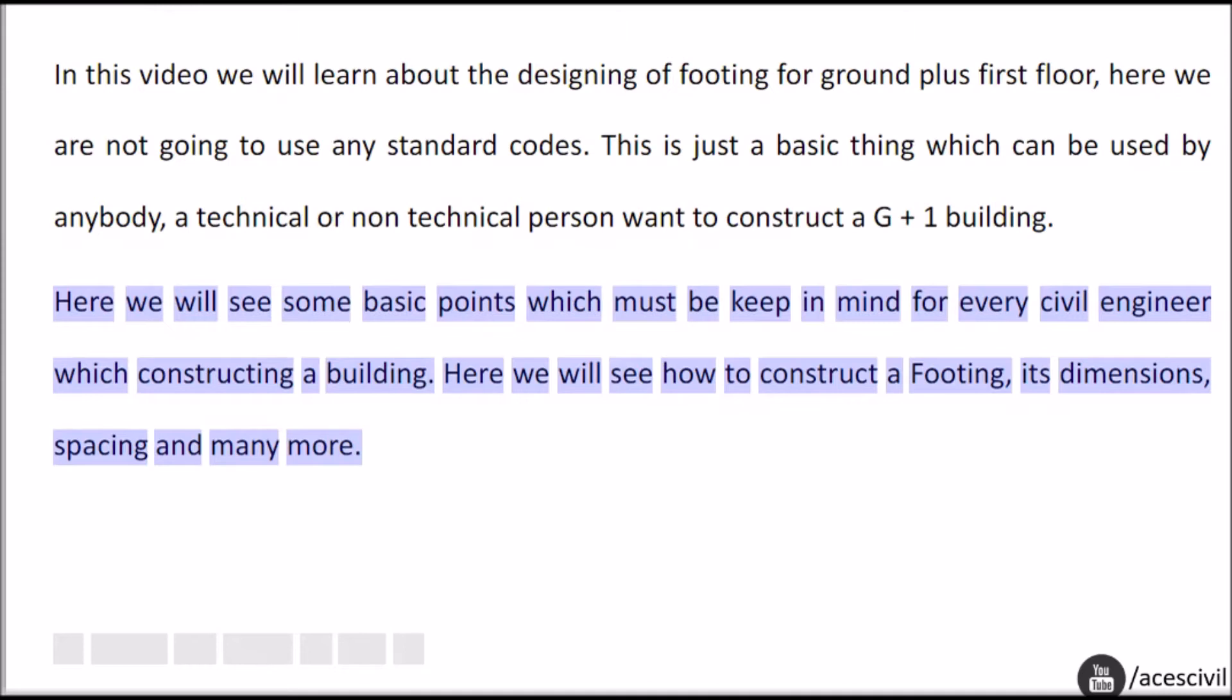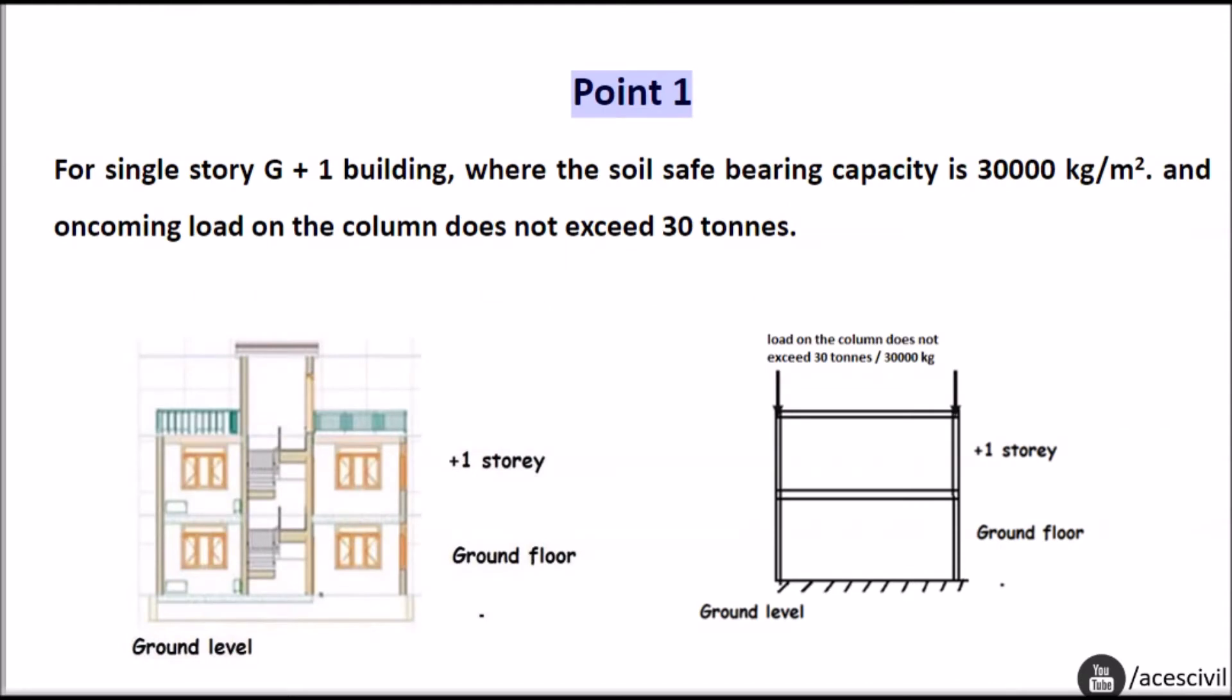Here we will see how to construct a footing, its dimensions, spacing and many more. Point one: for single-story G plus one building where the soil safe bearing capacity is 30,000 kilograms per m2 and oncoming load on the column does not exceed 30 tons.